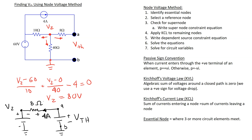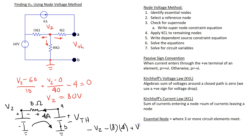Now we can apply Kirchhoff's voltage law to find V_Thevenin. Assuming a clockwise direction, going from minus to plus is a voltage rise. So we get Vz minus 8 times 4, which is the voltage drop across the resistor, and then plus V_Thevenin equals 0. Substituting Vz equals 80 volts, V_Thevenin equals 80 plus 8 times 4, which comes out to 112 volts.